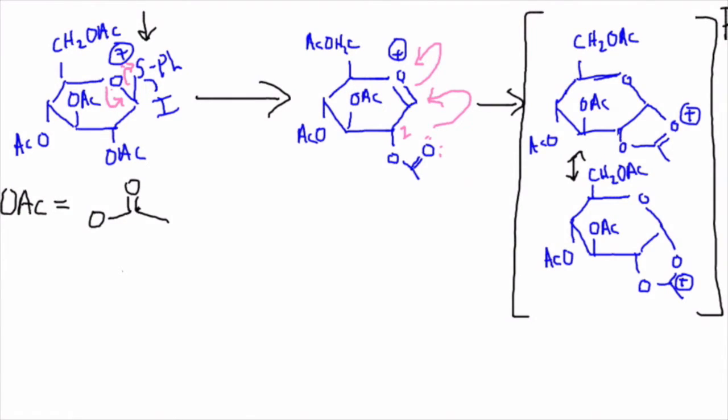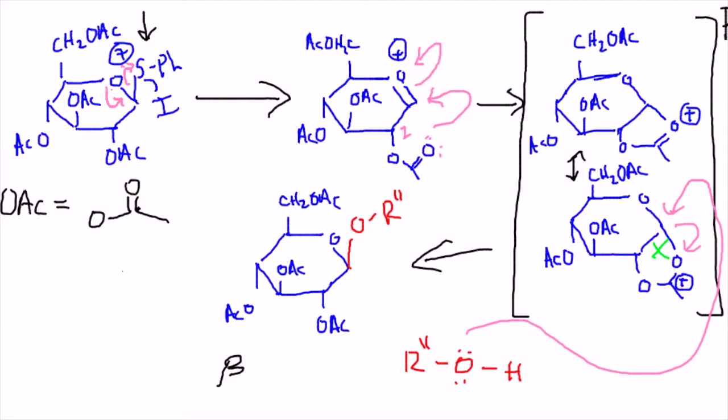This neighboring group intermediate effectively creates a blockade at the bottom face of this carbohydrate. So, a glycosyl acceptor, it's going to be easier for it to attack from the top face and not the bottom. So, we'll see predominantly the beta linkage formed in this glycosylation. We will see some alpha, but not a whole lot. This concept is called neighboring group participation.